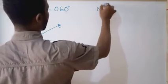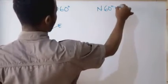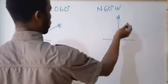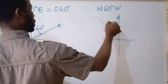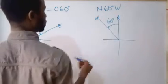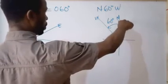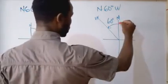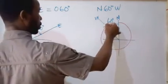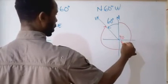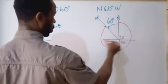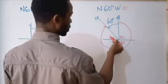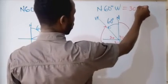If I am given N60°W and I want to convert back to three-figure bearing, I draw the direction — 60 degrees from north towards west. In three-figure we start from the north and move clockwise. Moving clockwise we pass 90, then 180, then 270. In the northwest quadrant, if this angle is 60, then the complementary angle here is 30. So in three-figure it will be 270 plus 30, which is 300 degrees.